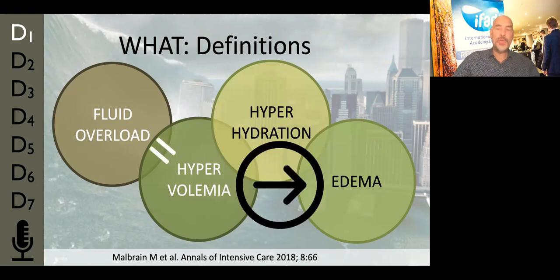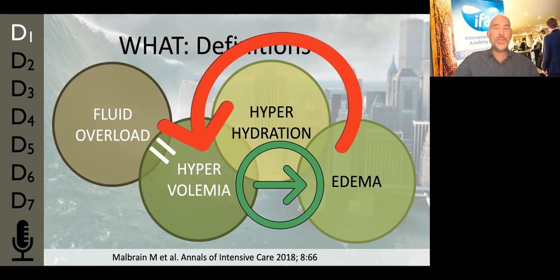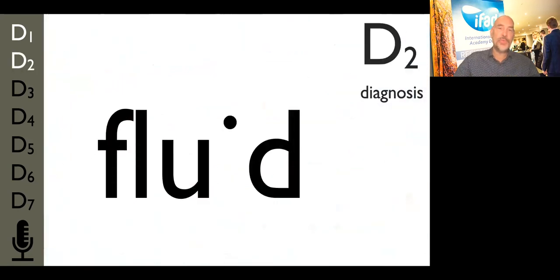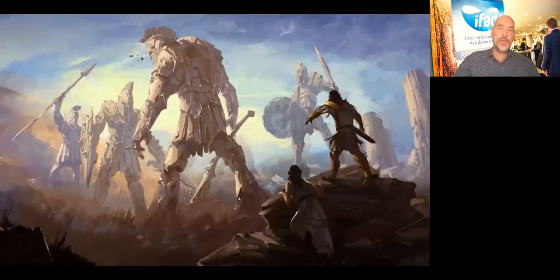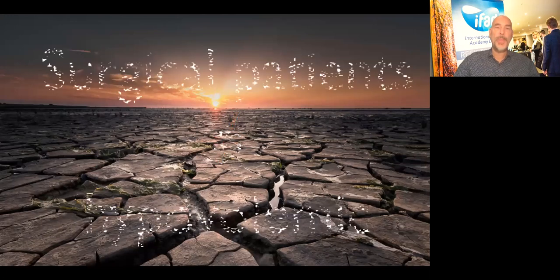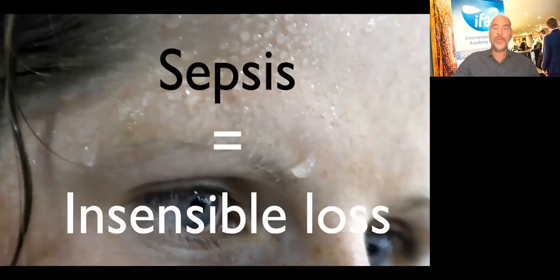While hypervolemia usually results in peripheral edema or anasarca, peripheral edema per se does not mean that the patient is hypervolemic. So maybe we should avoid the term fluid overload. D2 is on diagnosis, and fluid status matters. There are a lot of myths surrounding this — septic patients are not always hypovolemic, and surgical patients are also not always hypovolemic. Sepsis does not mean there are huge insensible losses.